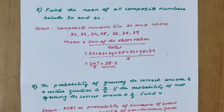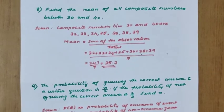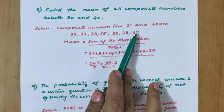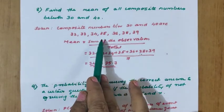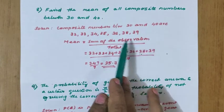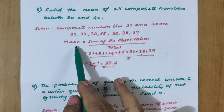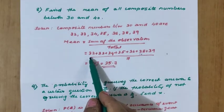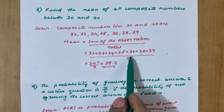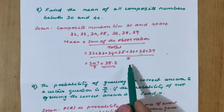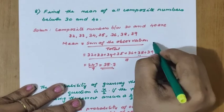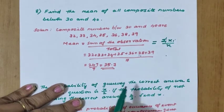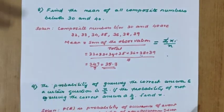Find the mean of all composite numbers between 30 and 40. Composite numbers between 30 and 40 are 32, 33, 34, 35, 36, 38, and 39 — there are 7 of them. Mean equals sum of observations divided by total number of observations, that is 32+33+34+35+36+38+39 divided by 7, which equals 245/7 = 35. You can also write the formula as σxi by n.